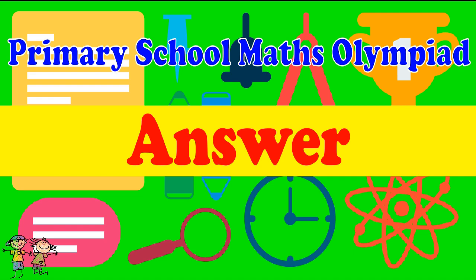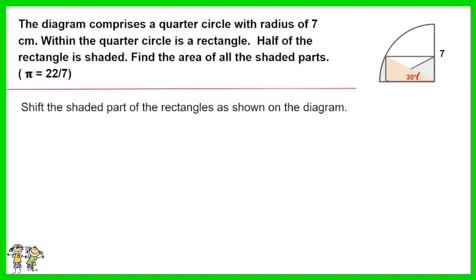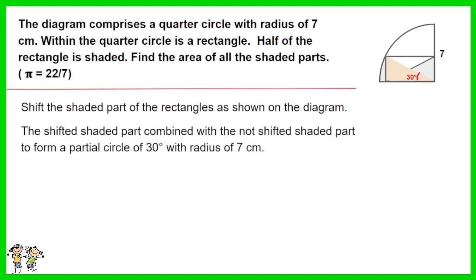Here is the recommended answer. Shift the shaded part of the rectangles as shown on the diagram. The shifted shaded part, combined with the not shifted shaded part, to form a partial circle of 30 degrees, with radius of 7 cm.